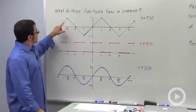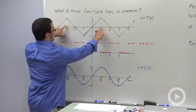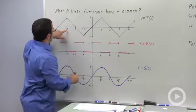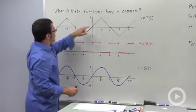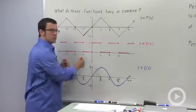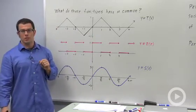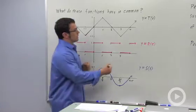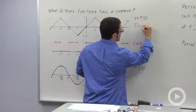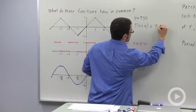And it turns out that the value is this difference, 4. I can get from one maximum to another by adding 4. Negative 3 plus 4 is 1. So 4 is the number that's going to work, and I would say that T of x plus 4 equals T of x.